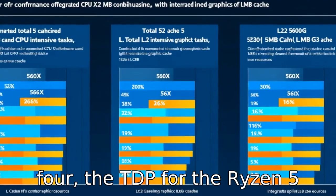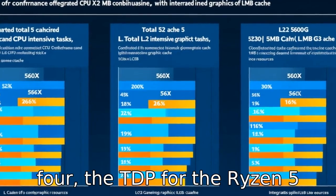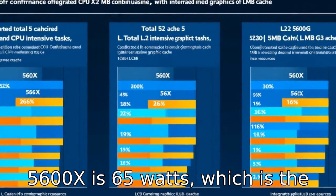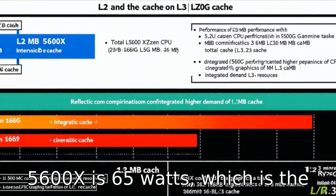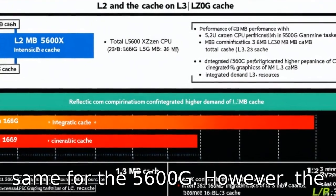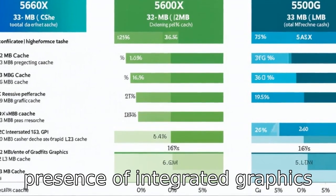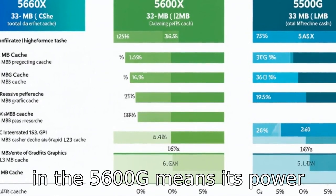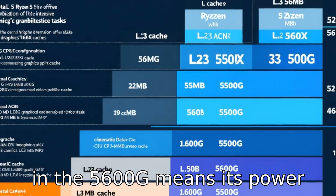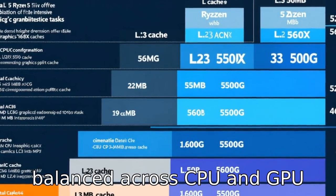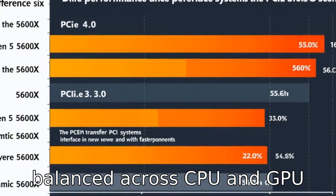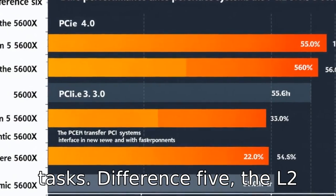Difference four: the TDP for the Ryzen 5 5600X is 65 watts, which is the same for the 5600G. However, the presence of integrated graphics in the 5600G means its power consumption could be more balanced across CPU and GPU tasks.